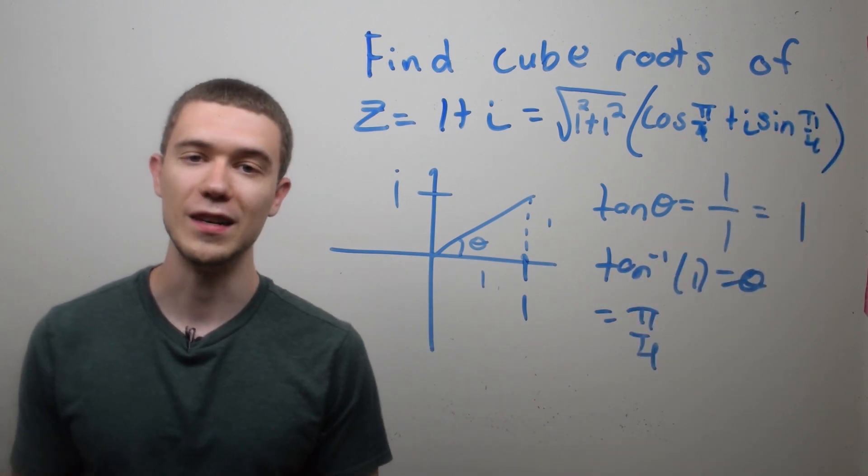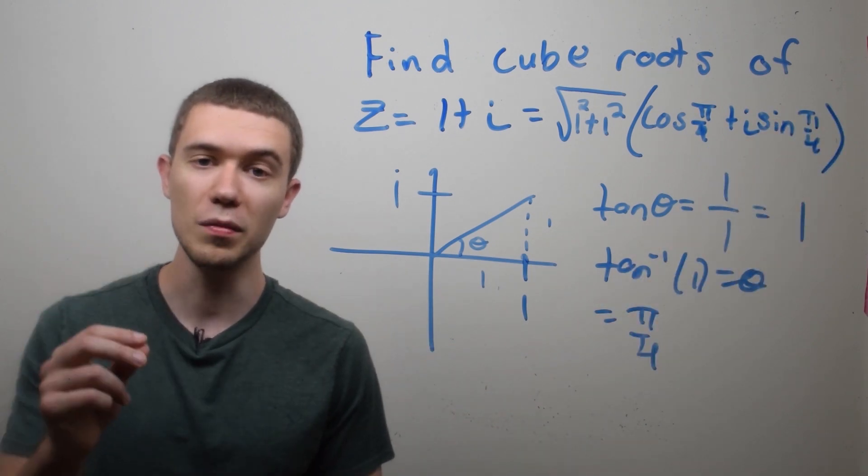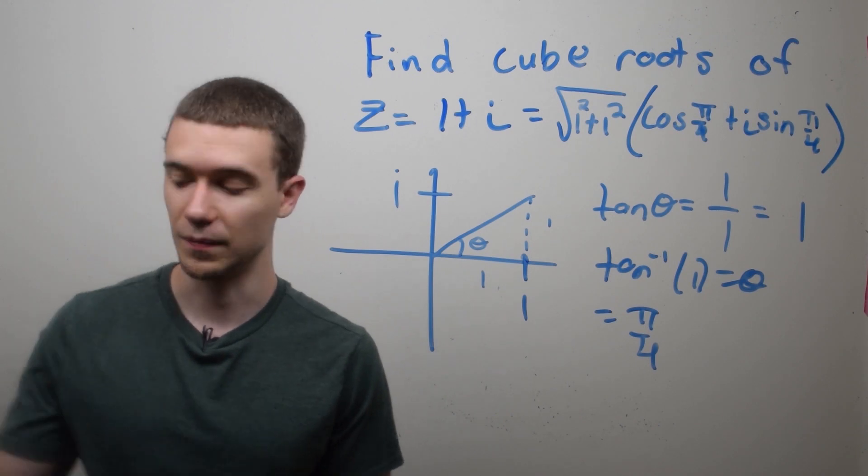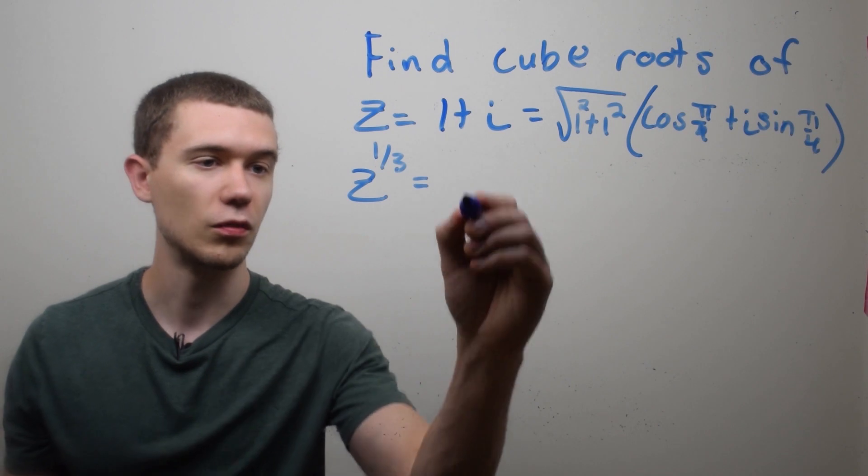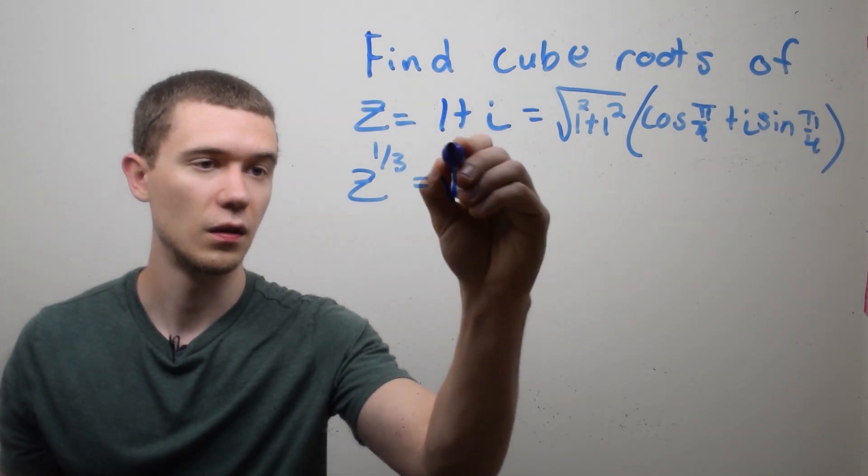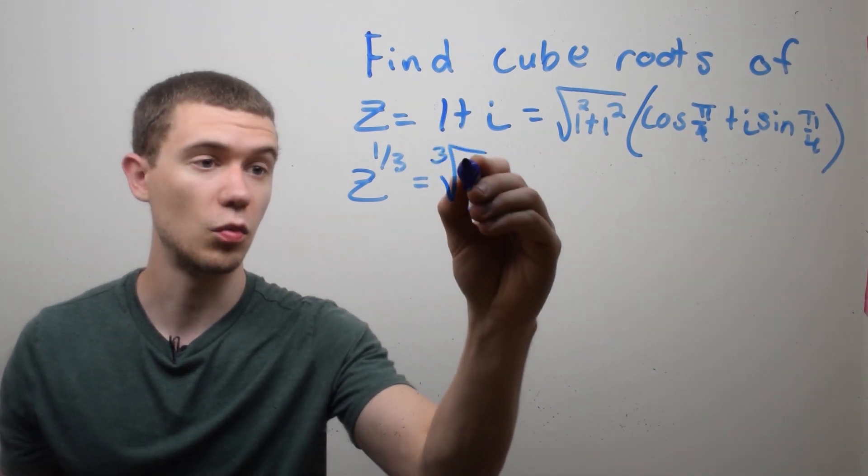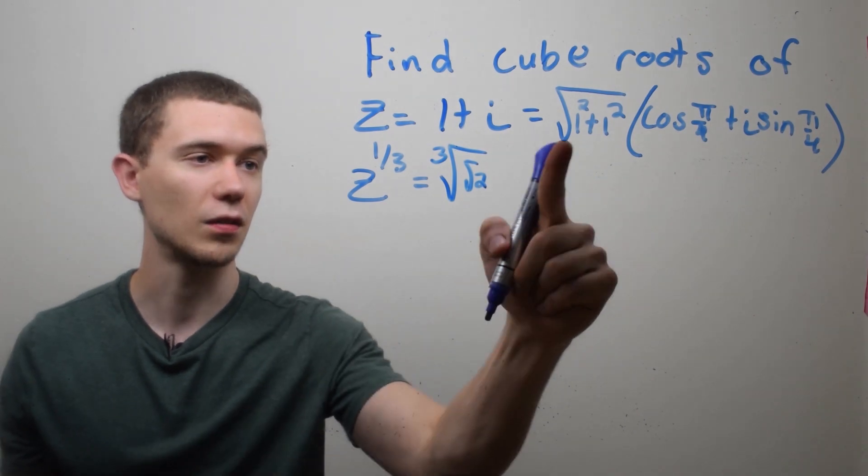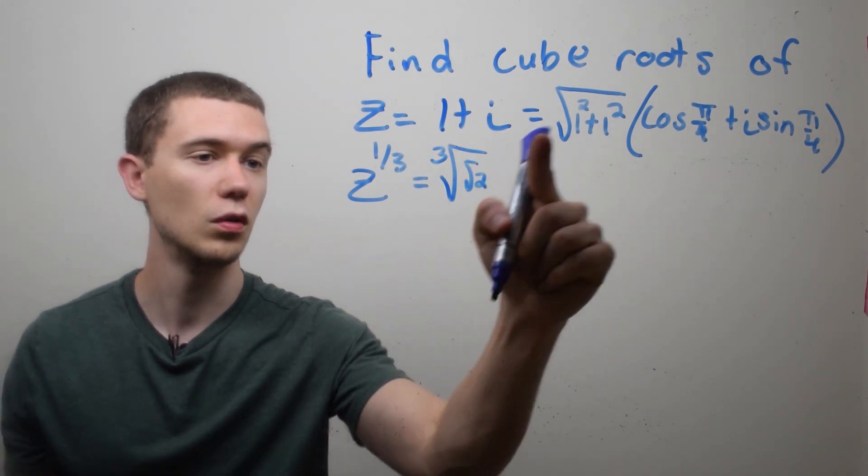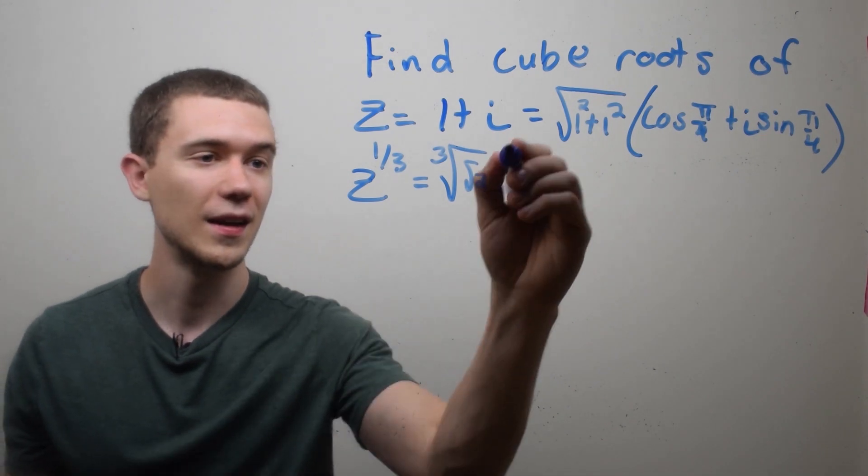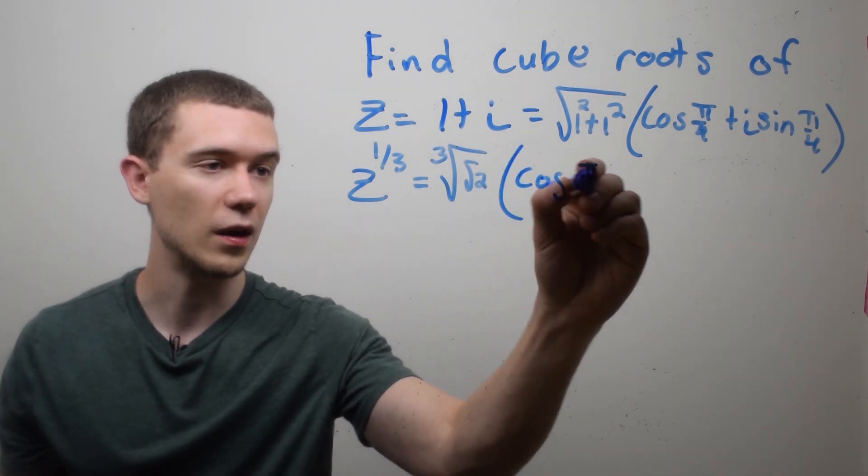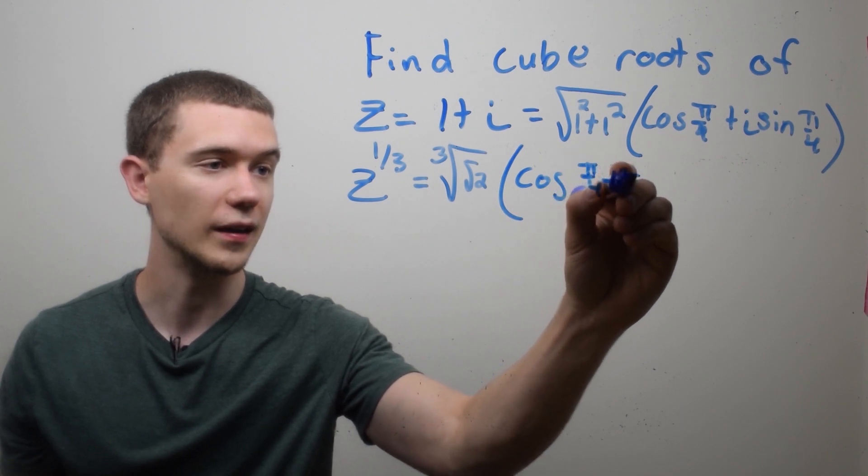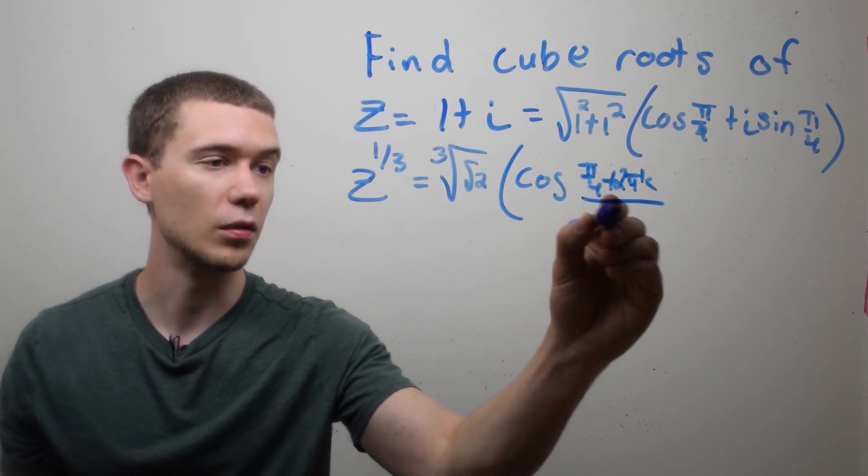So this is pi over 4 plus i sine of pi over 4. And now I don't want to simplify this because I'm going to take advantage of our formula for finding the roots. The cubed roots of z will be given by this, which is the cube root of square root of 2 in this case, right? 1 squared plus 1 squared is 2 square rooted.